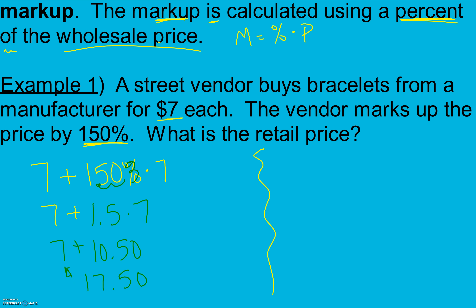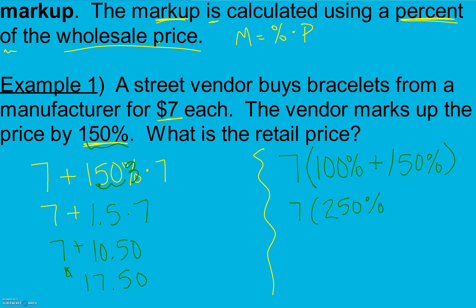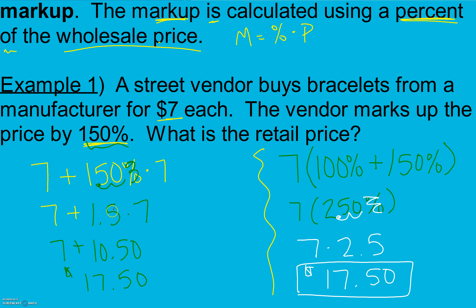We can also do this by thinking about it in terms of percents. We have to pay 100 percent of the amount they paid, and they're also going to make us pay 150 percent extra. We can add the percents: 100 plus 150 is 250. Moving the decimal two places, 7 times 2.5 also gives us $17.50. So either way — multiply the percent and then add the totals, or add the percents first and then multiply by the dollar amount — either way works.